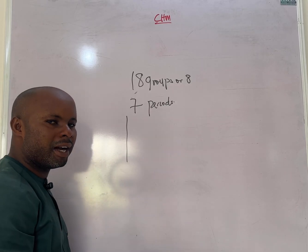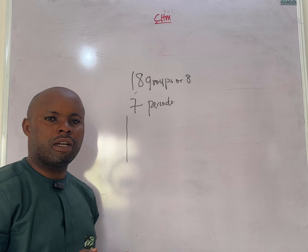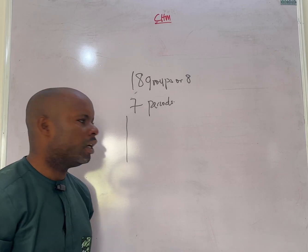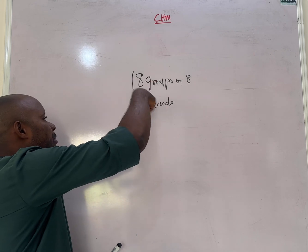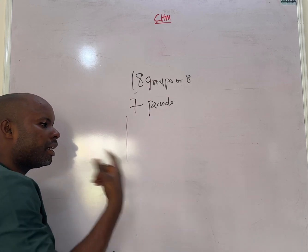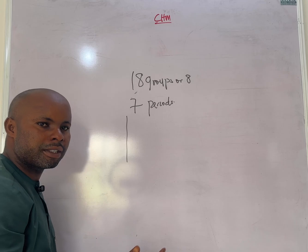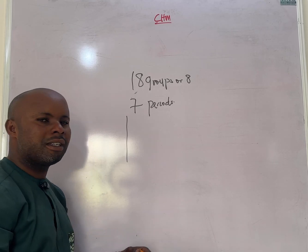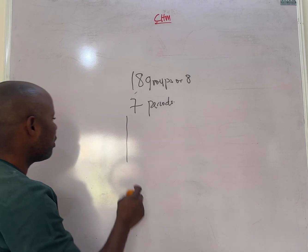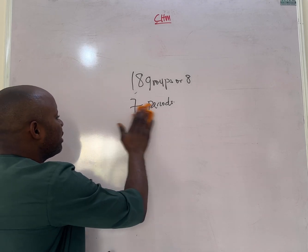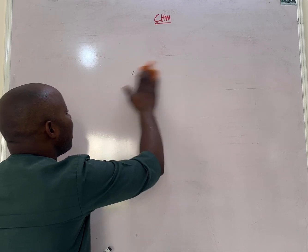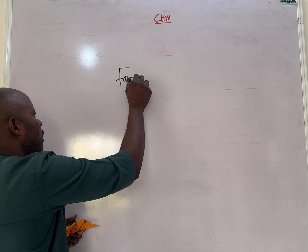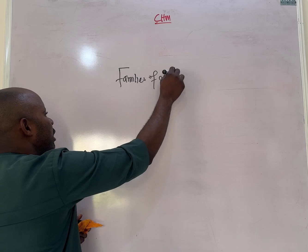For instance, group one elements are placed in group one because they have only one electron. Group two elements have two electrons in their outer shell. Each element in the same group shares similar characteristics, just like a family. In today's topic we'll be talking about the families of elements.